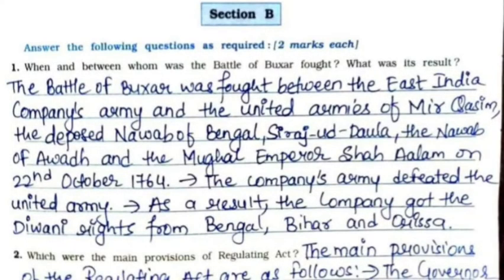Section B: Answer the following questions as required. First: When and between whom was the Battle of Buxar fought, and what was its result? The Battle of Buxar was fought between the East India Company's army and the united armies of Mir Kasim, the deposed Nawab of Bengal, Siraj-ud-Daula the Nawab of Avadh, and the Mughal Emperor Shah Alam on 22 October 1764. The company's army defeated the united army; as a result, the company got the Diwani rights from Bengal, Bihar and Odisha.